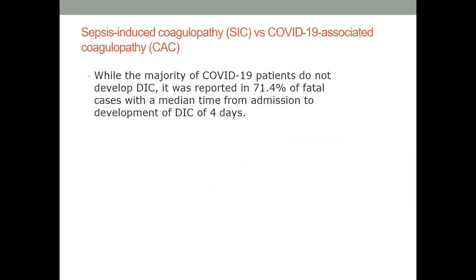To summarize the difference between COVID-associated coagulopathy and sepsis-induced coagulopathy: while the majority of COVID-19 patients do not develop DIC, DIC was reported in 71 percent of fatal cases, with a median time from admission to DIC development of four days. This tells us that established DIC diagnostic criteria won't help COVID patients early enough, because by the time coagulation parameters become markedly abnormal — PT, fibrinogen low, platelets mildly affected — you will miss patients with bad disease before criteria are met.